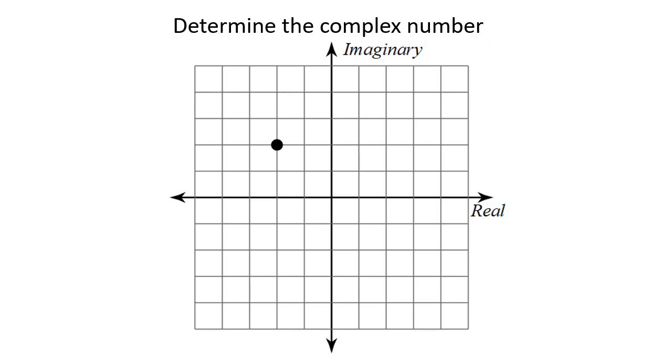For example, here we have it. What we can see is that this is the real axis. This is the positive side, this is the negative side, and then this is the imaginary axis. Going up is the positive, going down is the negative.